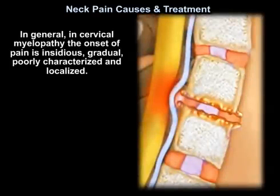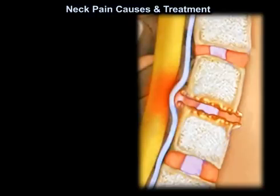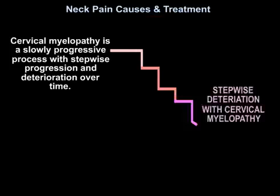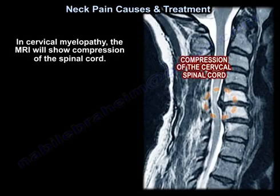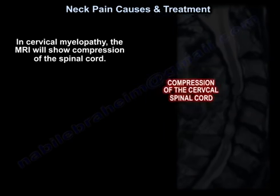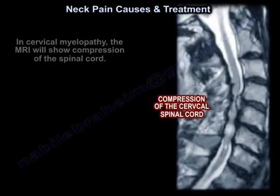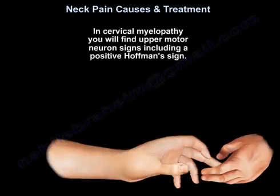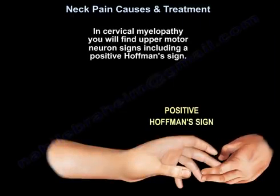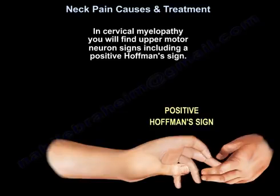In general, in cervical myelopathy, the onset of pain is insidious, gradual, poorly characterized, and localized. Cervical myelopathy is a slowly progressive process with a stepwise progression and deterioration over time. In cervical myelopathy, you will find upper motor neuron signs, including a positive Hoffman sign.